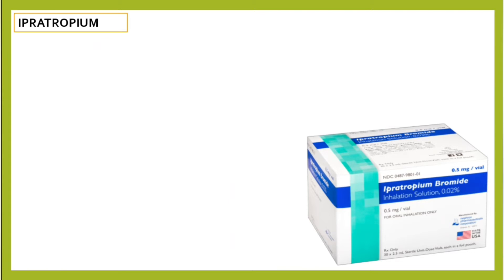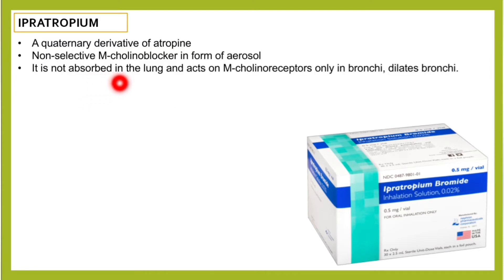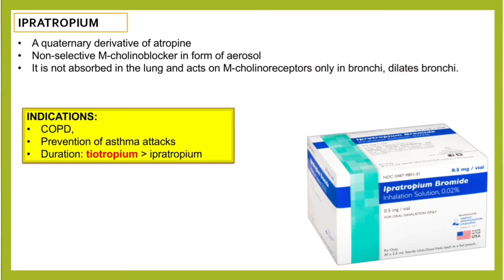Ipratropium bromide is a quaternary derivative of atropine. It is non-selective, like other m-cholinoblockers we covered. It is given in the form of an aerosol, is not absorbed in the lungs, and acts longer on cholinoreceptors only in the bronchi, causing bronchodilation. It is indicated in COPD.